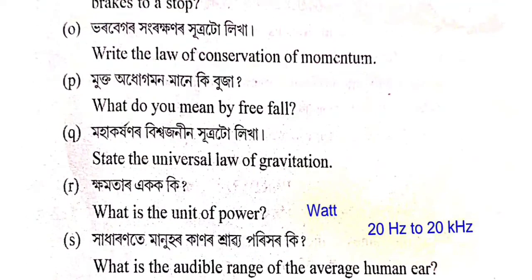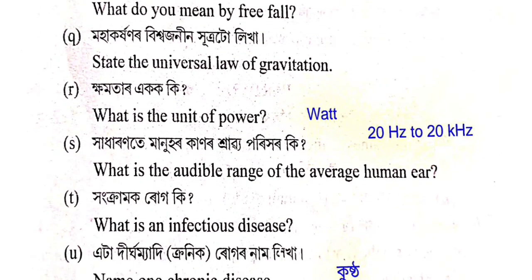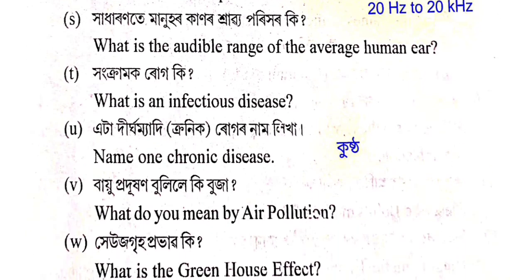Next: Mukta adhugamon manekibuza — what do you mean by free fall? Moha kar khonar vishwa zanin hutra tu likhha — state the universal law of gravitation. Kya matar ekokki — what is the unit of power? The unit of power is the watt. Hadhaar de manohar kanor shwaibba porikhar ki — the audible range of the human ear is 20 Hz to 20 kilohertz. Hongkramokruk ki — what is an infectious disease?